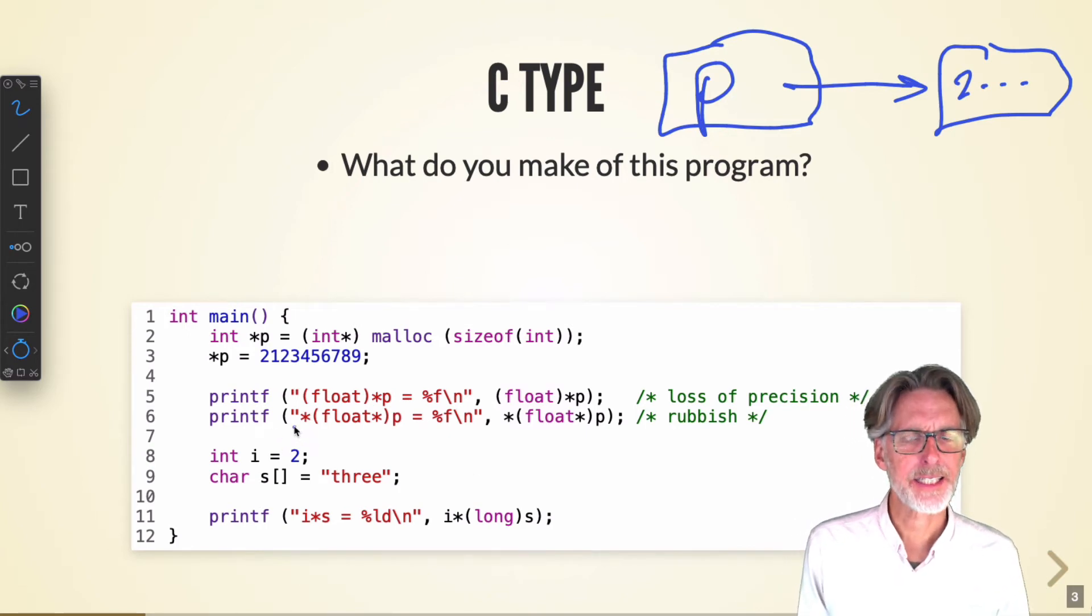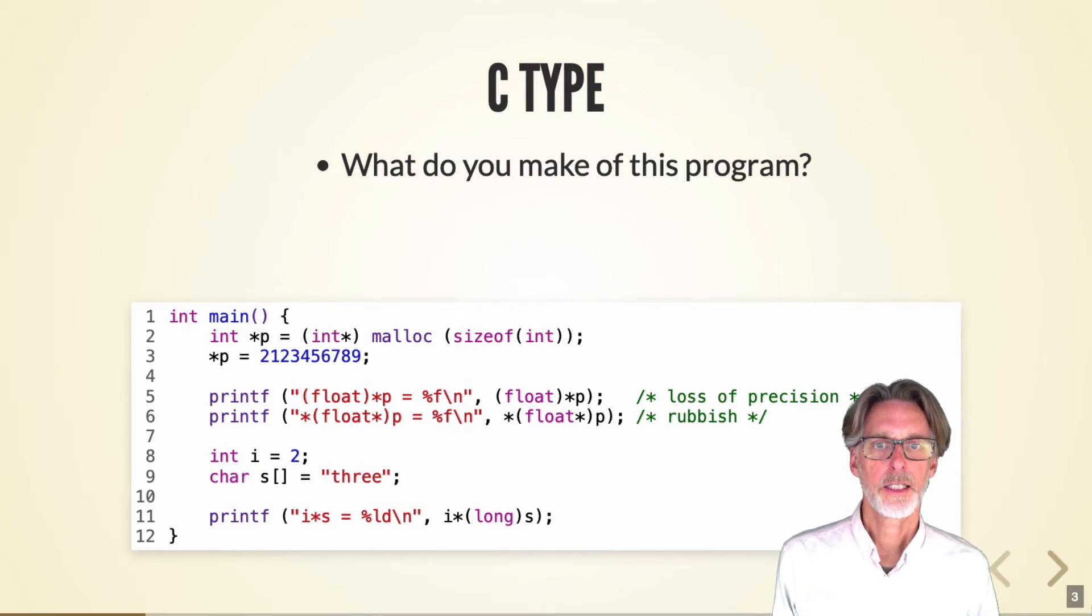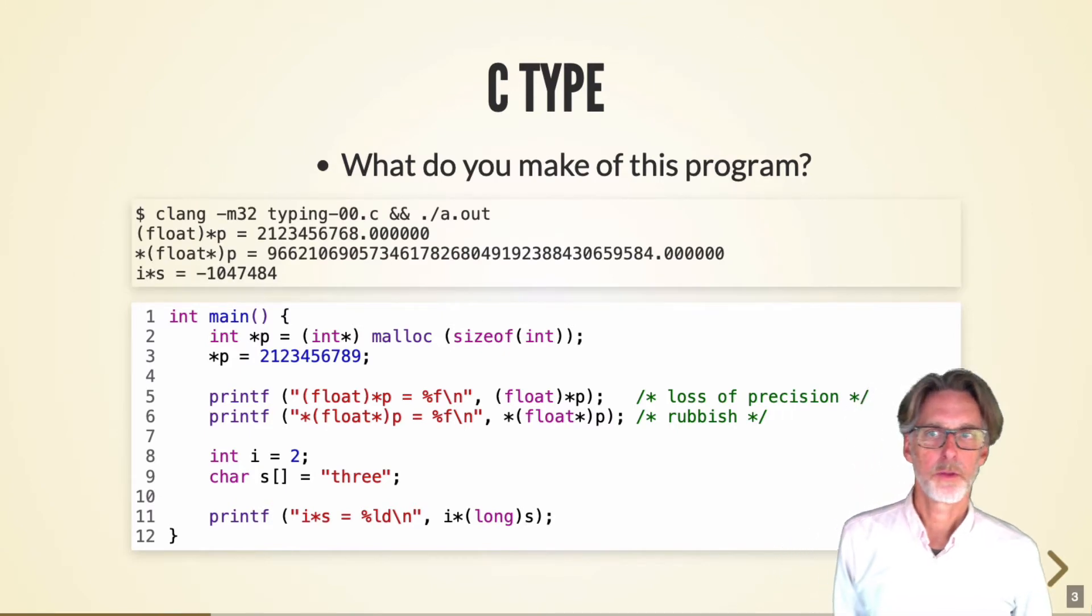Instead, on line six, what I'm going to do is take the reference to P, this value here. Instead of treating it like a reference to an integer value, I'm going to treat it like a reference to a floating point value. And then I'm going to dereference it. In this case, no conversion is going to happen. And instead, the bit pattern stored here will be simply interpreted as a floating point number. In this case, the output we get will be as follows.